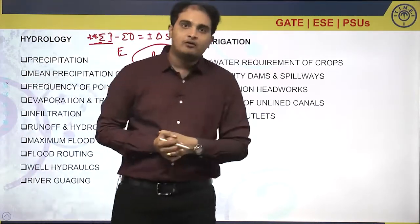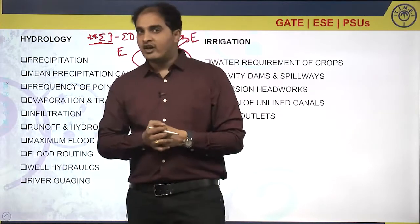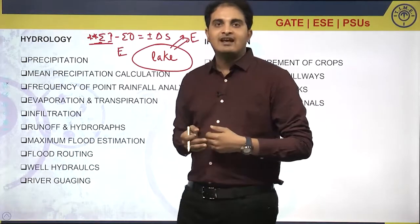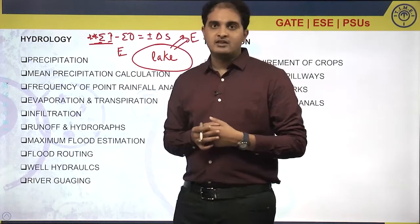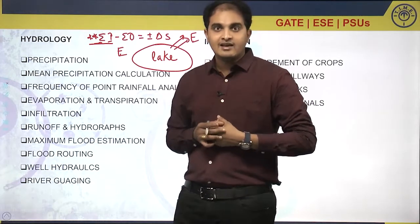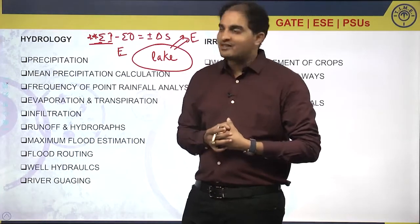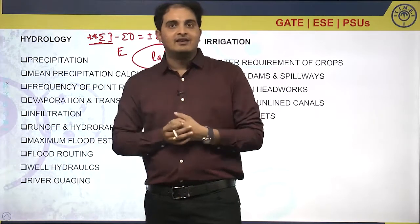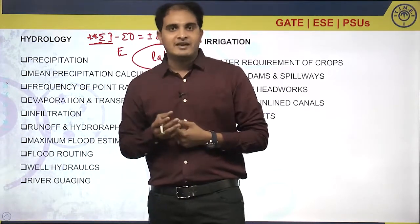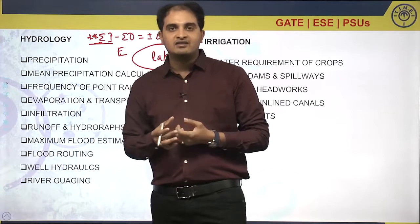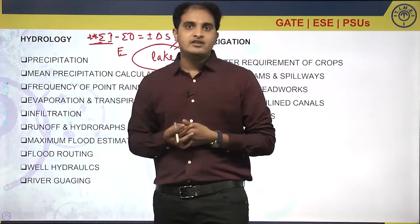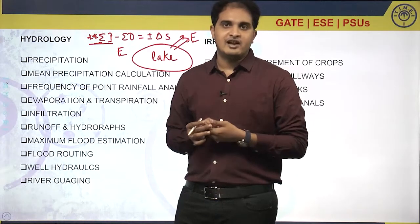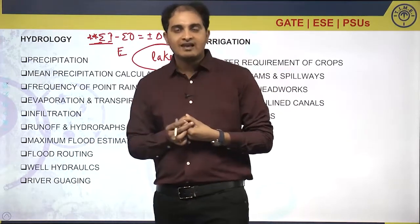The summation of evaporation and transpiration is known as evapotranspiration. There are chances of questions on evapotranspiration in GATE and ESE exams, such as how to measure it. Evapotranspiration is measured by an instrument called a lysimeter. We also have equations for measuring evapotranspiration — Penman's equation and Blaney-Criddle equation — which should be focused on for GATE and ESE.